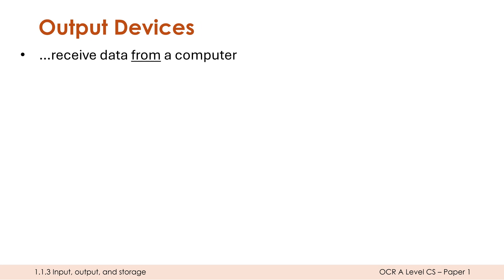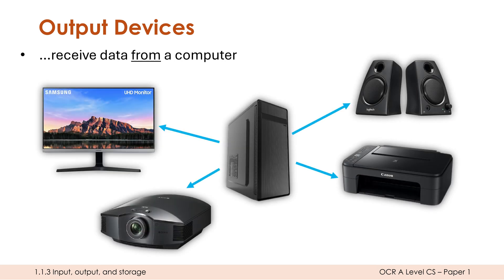Output devices — again, we're not going to think too hard about this because there are always edge cases. Output devices generally receive data from a computer and either show it to the user or do something with it in the environment. Four examples are: monitors, projectors, printers, and speakers.